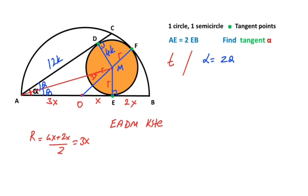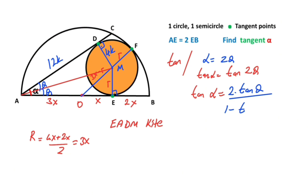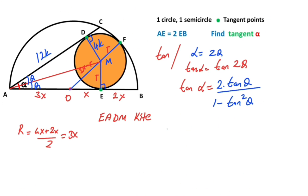Therefore, if we take the tangent of both sides of the equation, we get tangent alpha equals tangent of two theta. We know the double angle expansion: tangent two theta equals two times tangent theta over one minus tangent squared theta. If we focus on triangle ADM and calculate tangent theta, tangent theta equals 4K over 12K, which equals one third.